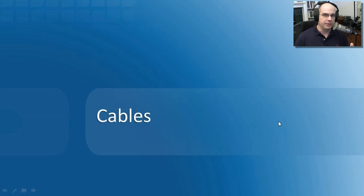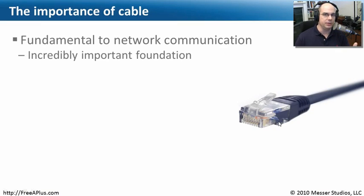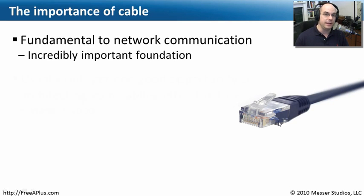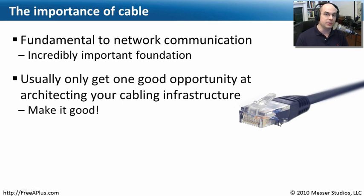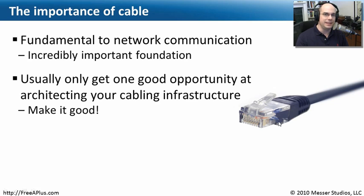Let's start with cables. Cables are certainly the fundamental aspect of our network communication. If we don't have cables, we're in pretty bad shape. Although these days, you may find that cables are becoming less and less important. The wireless communication that we have these days is making cables slowly go away, but they're nowhere close to leaving us. We have such advantages with a cabling infrastructure: there's speed, reliability, privacy, and lack of interference. There's a lot of nice things that come with having that physical medium.